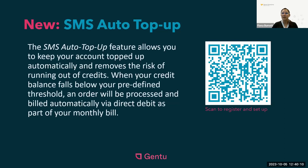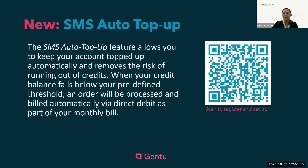Instead of monitoring your own SMS credit balance and manually purchasing additional credits with our team, we encourage you to use the new auto top-up feature. This allows you to keep your SMS credits topped up automatically and removes the risk of running out of credits. When your credit balance falls below your own predefined threshold, an order will be processed and billed automatically via direct debit as part of the monthly bill. We welcome you to scan the QR code here to register your interest and set this up for the practice.